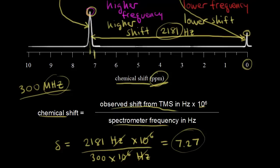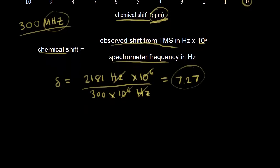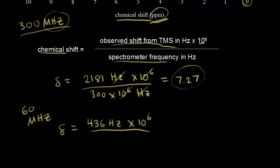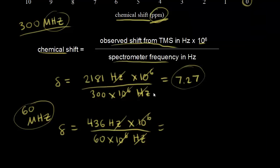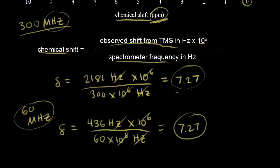Let's do this calculation again using a different spectrometer — a 60 megahertz spectrometer. If you use a 60 megahertz spectrometer, the protons on benzene absorb a frequency 436 Hertz more than the protons on TMS. So the chemical shift is 436 Hertz times 10 to the sixth divided by 60 times 10 to the sixth Hertz. The Hertz and 10 to the sixth cancel, and 436 divided by 60 gives us 7.27 again.